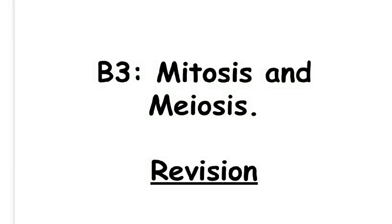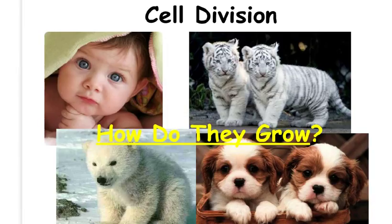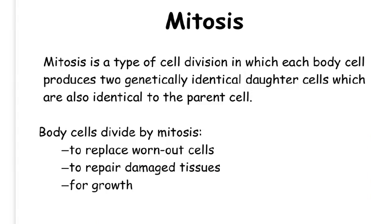This is the revision video for unit B3, mitosis and meiosis. Living things grow as they age, but where do the new cells come from that enable them to grow bigger? The answer is mitosis.